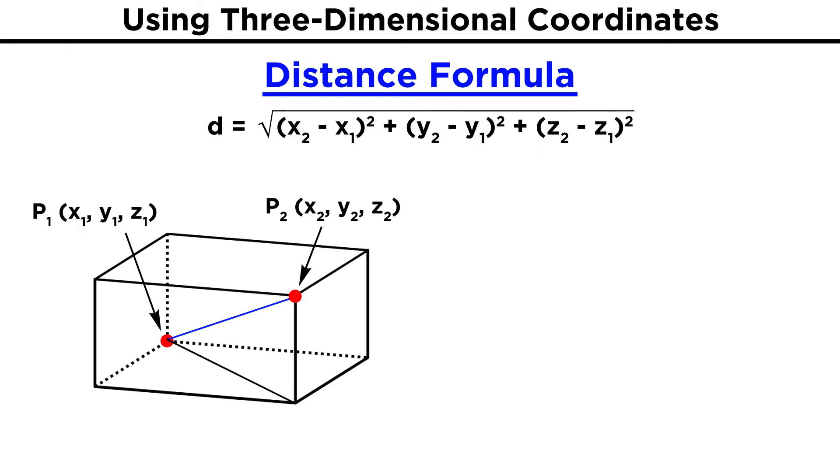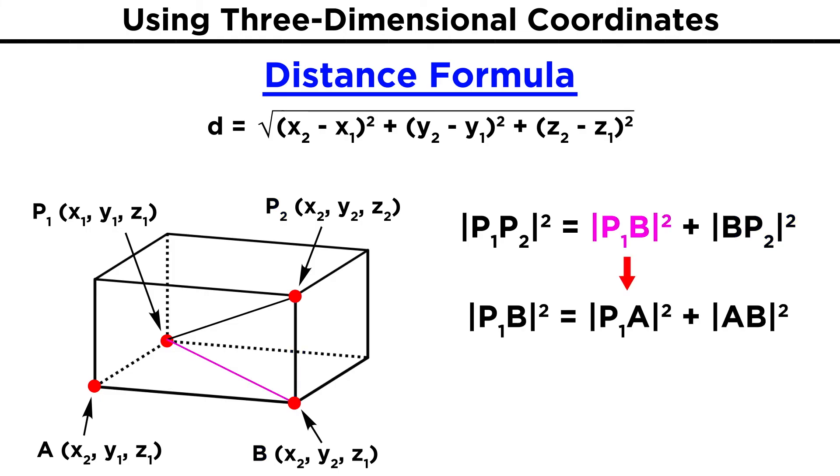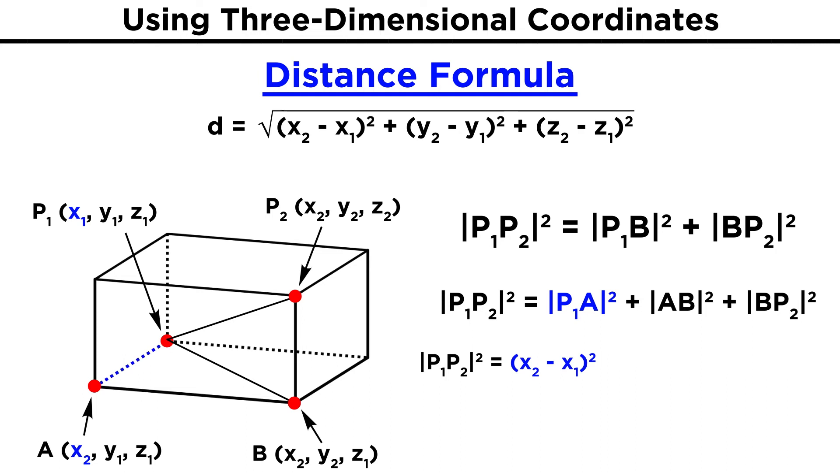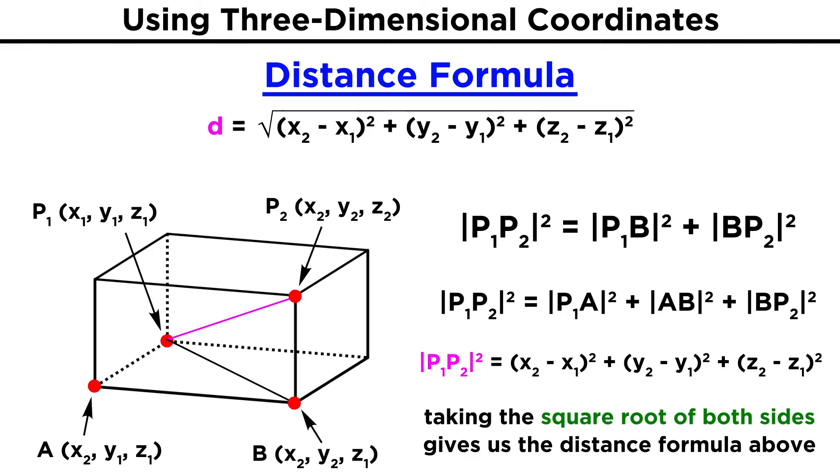We can arrive at this formula simply by drawing triangles within the box and applying the Pythagorean theorem. Let's call these two points A and B. P1P2 quantity squared is equal to P1B quantity squared plus BP2 quantity squared. P1B quantity squared, in turn, is equal to P1A quantity squared plus AB quantity squared, so we can make that substitution now. Well, P1A is just the difference in the x-coordinates, AB is the difference in the y-coordinates, and BP2 is the difference in the z-coordinates, so let's represent them that way and take the square root of both sides. That's how we get this distance formula.